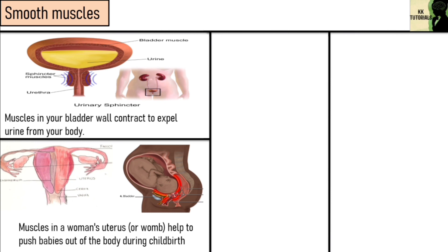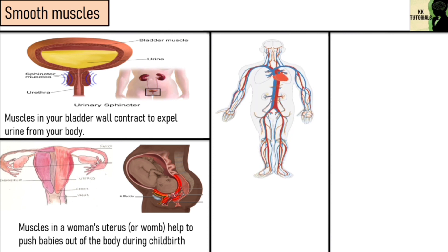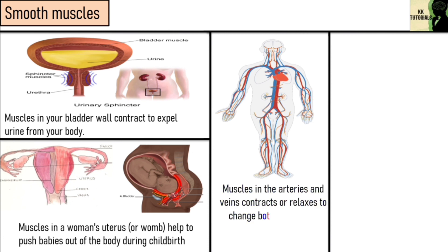These muscles are also present in the walls of passageways such as the arteries and veins of the circulatory system. These muscles in the arteries and veins contract or relax to change both the volume of blood vessels and the local blood pressure, a mechanism that is responsible for the redistribution of blood within the body to areas where it is needed.